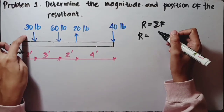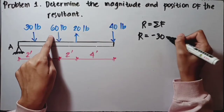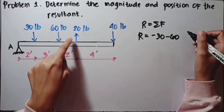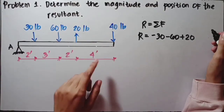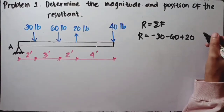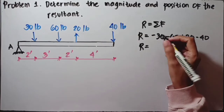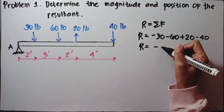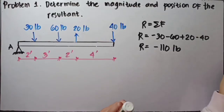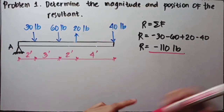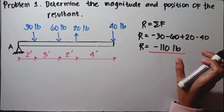For example, for the 30-pound force, it should be negative 30 because it is going down. For 60, also negative. For 20, it's positive because that force is going up — so plus 20. Next, 40 is going down, so negative 40. Therefore, R equals negative 110 pounds. Don't forget the unit. The negative answer means the resultant is going downward.